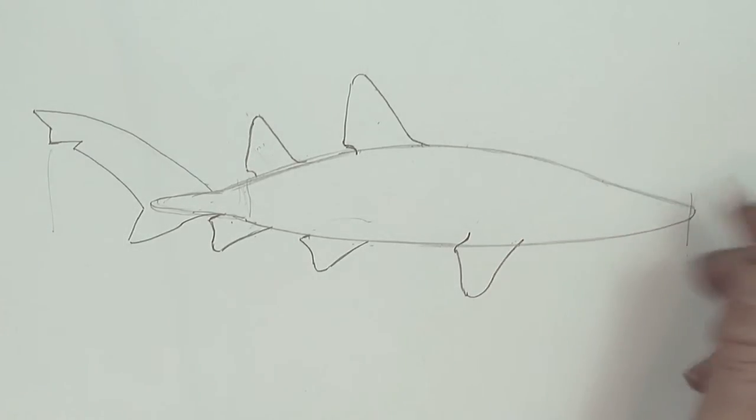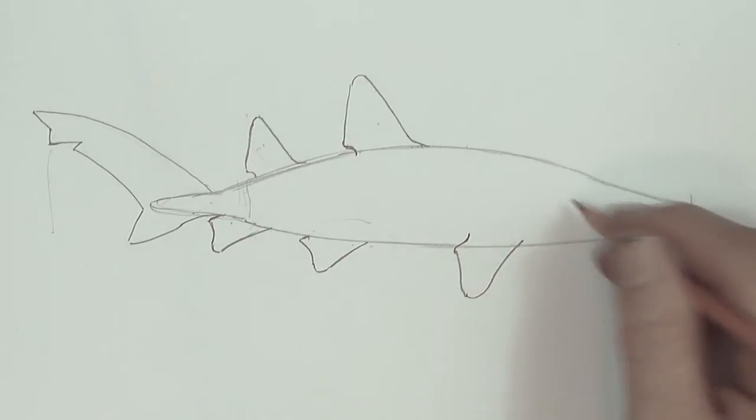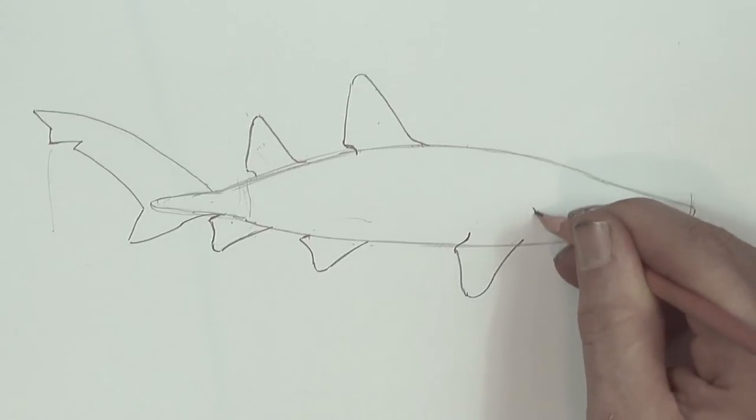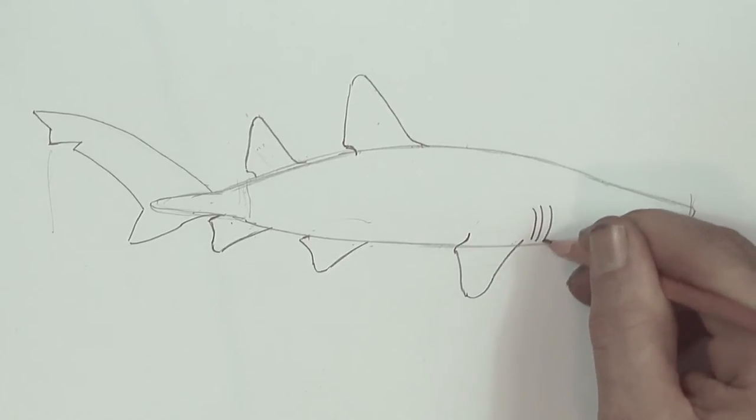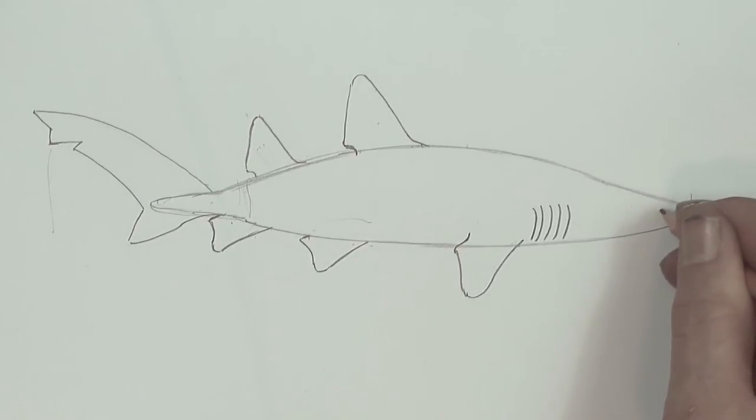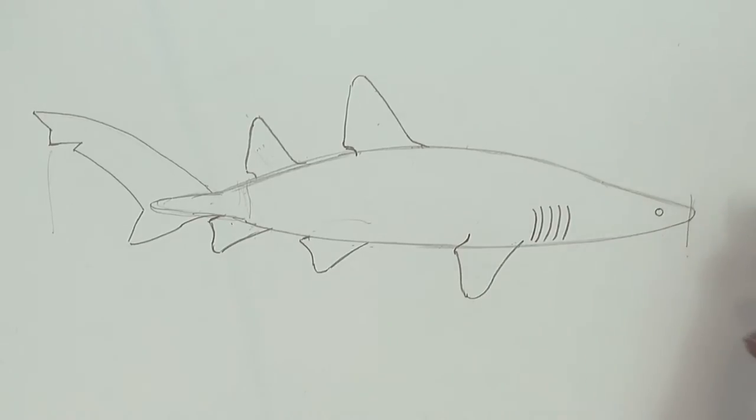Now, we're going to put in five gills here, it's just going to be a slight curve, I'm going to curve them with the shape of the body. So, one, two, three, four, five, there's our gills. We're going to put an eye in about here, it's a really tiny little circle with a dot in the center.